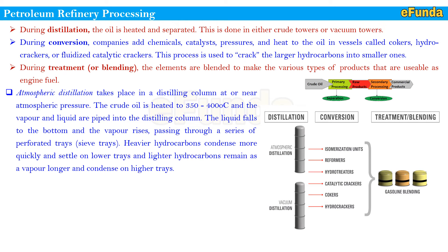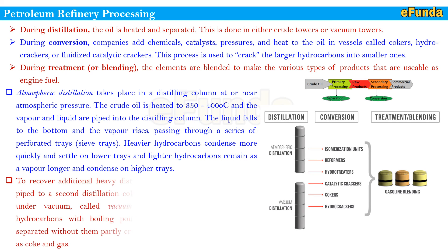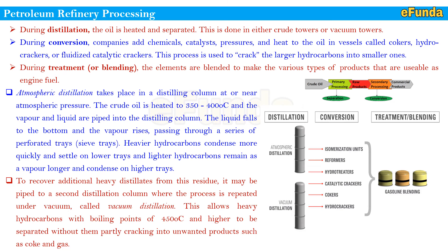The residue drawn from the bottom may be burned as fuel, processed into lubricating oils, waxes, and bitumen, or used as feedstock for a cracking unit. To recover additional heavy distillates from the residue, it may be piped to a second distillation column where the process is repeated under vacuum — called vacuum distillation. This allows heavy hydrocarbons with boiling points up to 450 degrees Celsius and higher to be separated without partly cracking into unwanted products such as coke and gases. The atmospheric distillation unit comprises isomerization units, reformers, hydrotreaters, and the vacuum distillation feeds catalytic crackers, cokers, and hydrocrackers, with gasoline blending also shown.